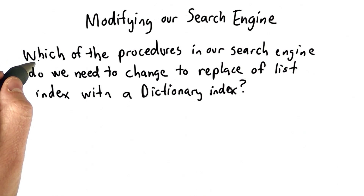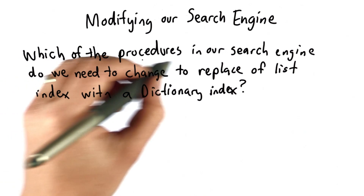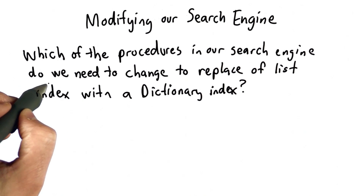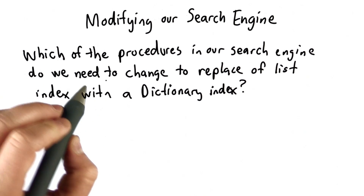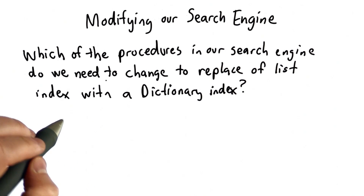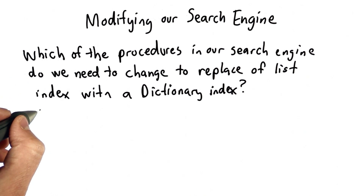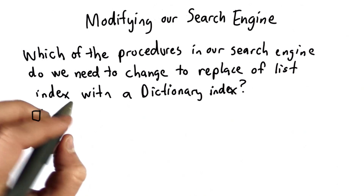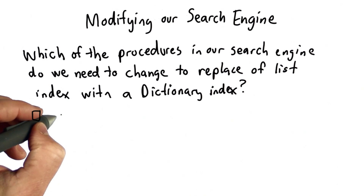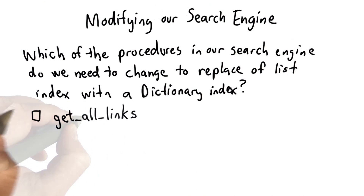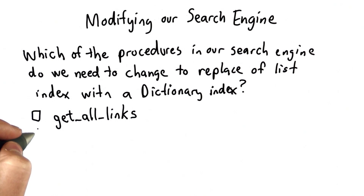To start thinking about this, the question is: which of the procedures we've defined for our search engine will we need to change to make use of the dictionary instead of the list? Here are the choices — all the procedures defined so far. We had a procedure `get_all_links`, which would scan a web page and return a list of all the links in that web page.